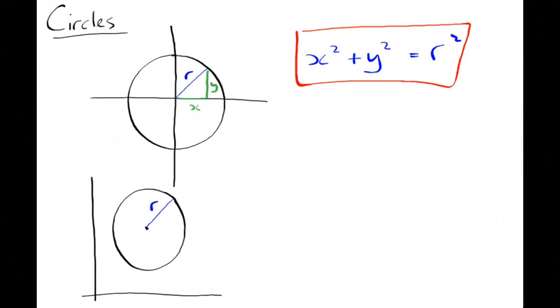Again, from the centre to the edge is called the radius r. The centre will give it a generic point, we'll call it ab. Now if we try and draw that same triangle in, that bottom edge is actually x minus a